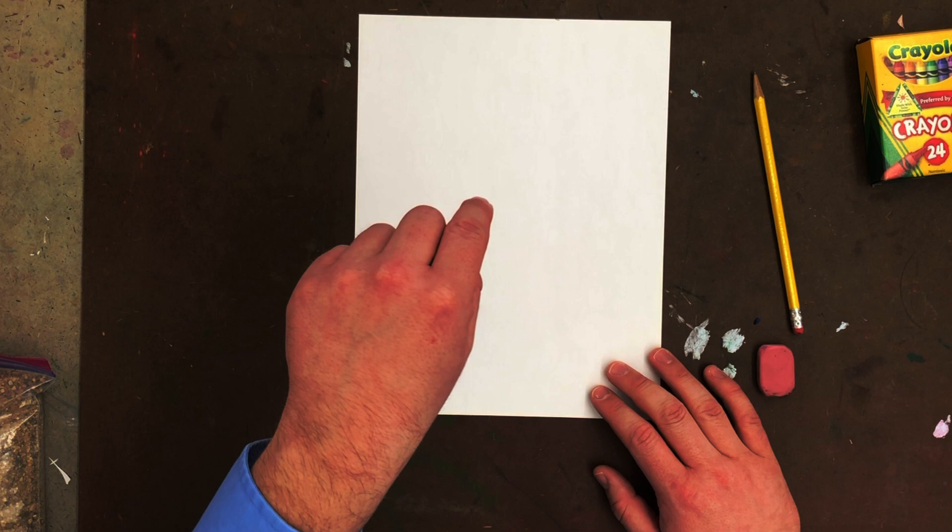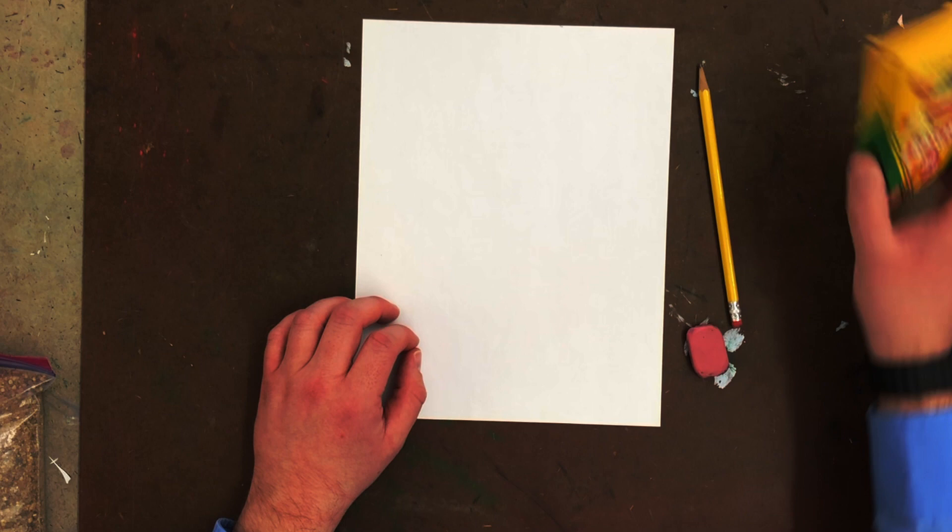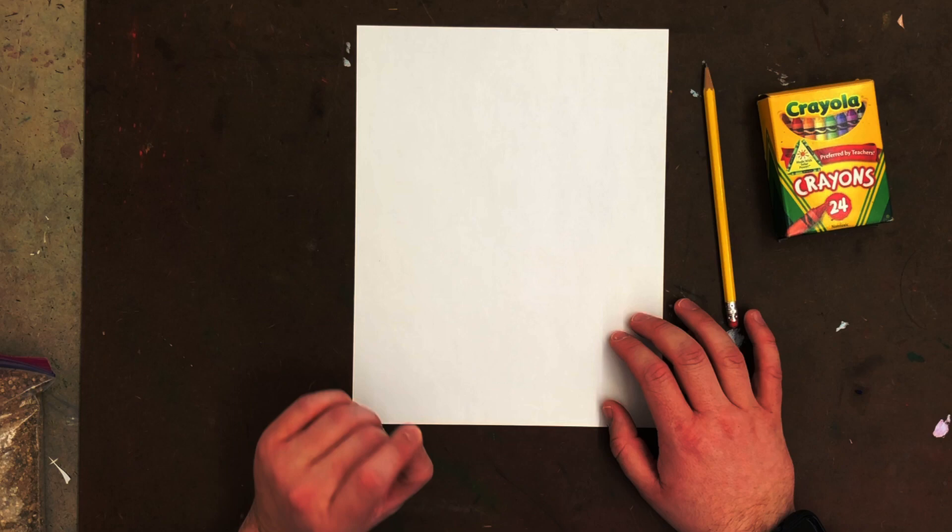You're going to need a white piece of paper, an eraser, a pencil. You're going to want some crayons and you may want to have your parents around for just a smidge of help. The other thing you're going to need is your hand.